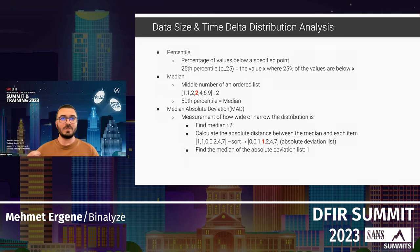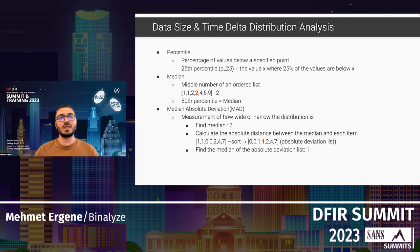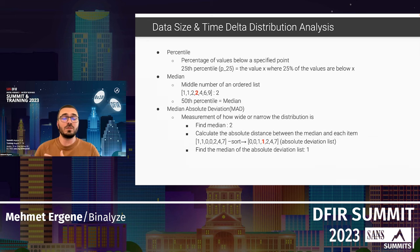To analyze the data size and time delta distributions, you need to know some statistical terms. The first is the percentile — the percentage of values in a data set that fall below a specified point. For example, the 25th percentile is the value X where 25% of values in that list are below X.